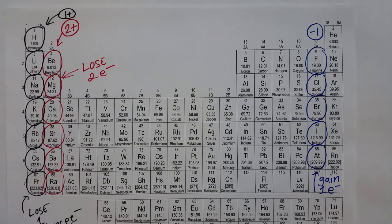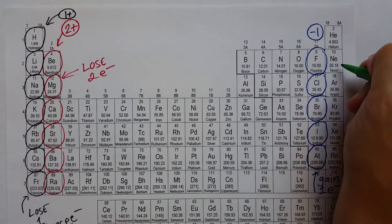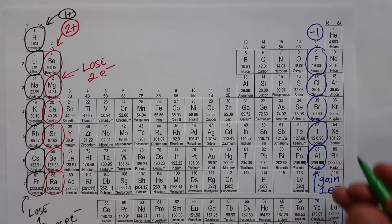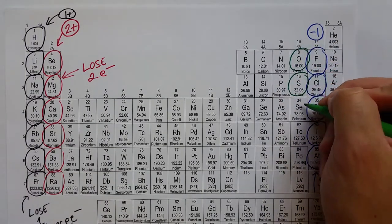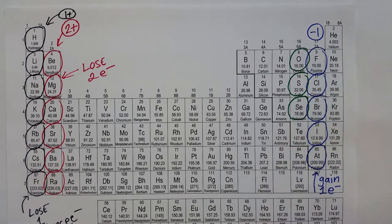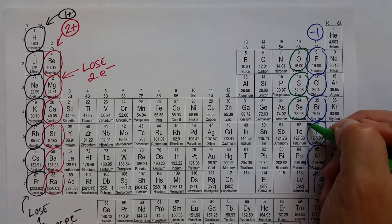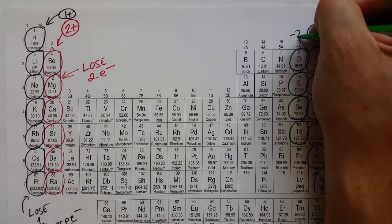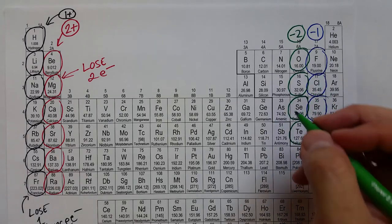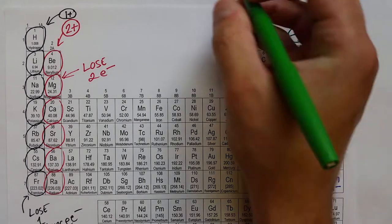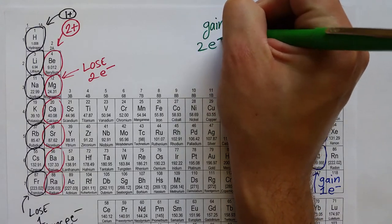Oxygen will gain two electrons, because that puts it into the same electron configuration as neon. So the rest of the nonmetals in group 6 will form a minus 2 ion after gaining two electrons to satisfy the octet rule.